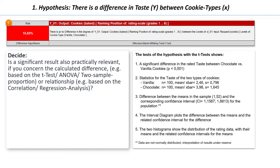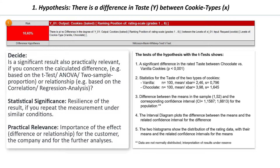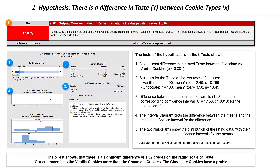To summarize for the moment: statistical significance informs us about the resilience of the hypothesis in the future — that in the future we will find a similar difference under similar conditions. We can only answer the question of practical relevance if we assess the importance of a certain significant difference or relationship for our further analysis, and thus for our company or our customers. In our case we think the result should have consequences. If we change nothing, then with a probability of 95%, the chocolate cookies will also in future be rated at least 1.15 grades worse than the vanilla cookies, and we can already include this result in our root cause analysis.